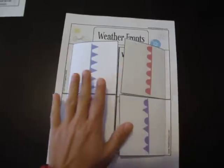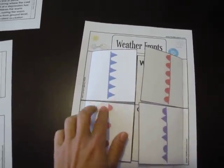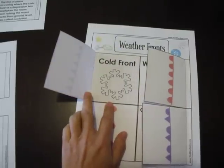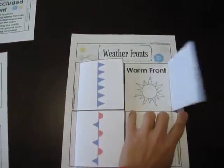And then they can look at the symbols and try to remember what does this one represent? It's a cold front. And they can open it and check. Yep, you got it right. What's this one? Warm front. They can open it. Got it right.